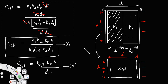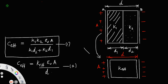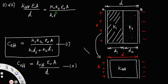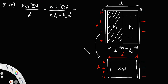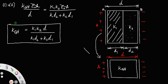Setting Equation 1 equal to Equation 2: k_eff·ε0·A / d = k1·k2·ε0·A / (k1·d2 + k2·d1). Cancelling ε0·A from both sides, the final expression is k_eff = k1·k2·d / (k1·d2 + k2·d1). This is the effective dielectric constant of two dielectrics connected in series.